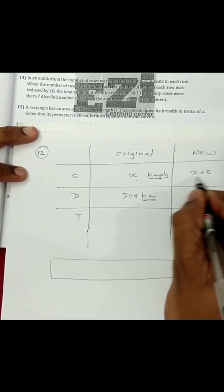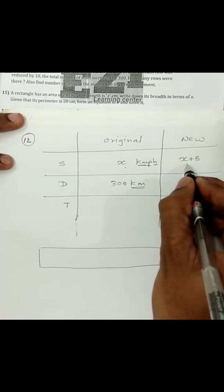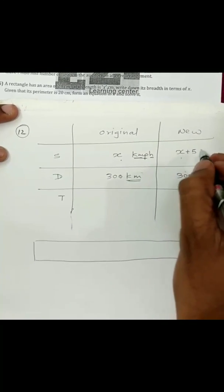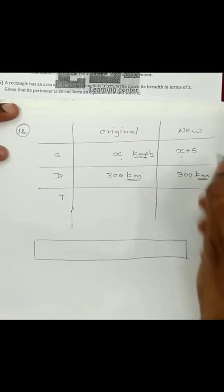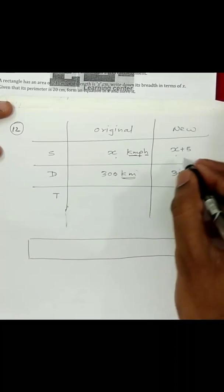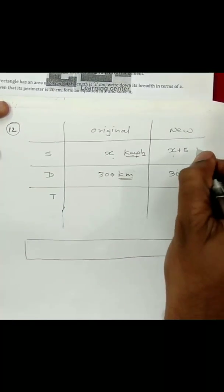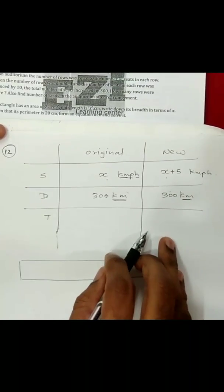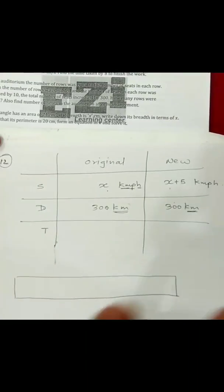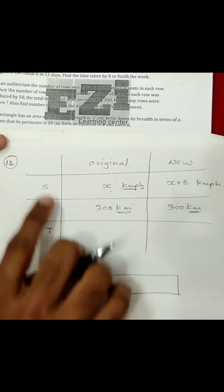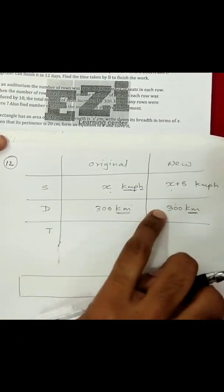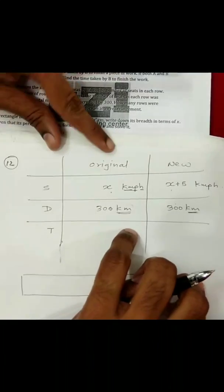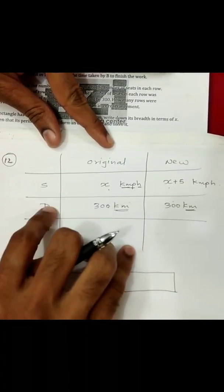If the speed is doubled, you would write 2x. So this is the speed data, and the units are km per hour. Since we have used two data — speed and distance — we will write time in terms of speed and distance.